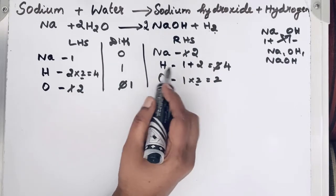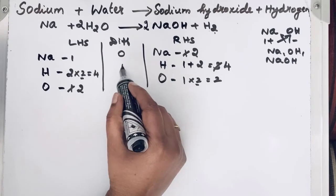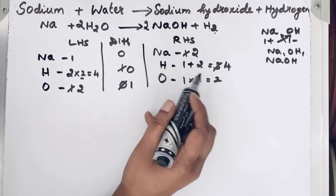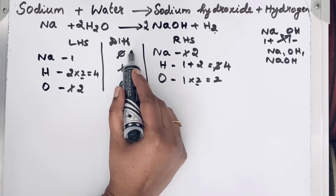Let us see the difference now. For hydrogen, 4 minus 4, 0. So we will cut 0. Then for sodium, it is, difference is 1.